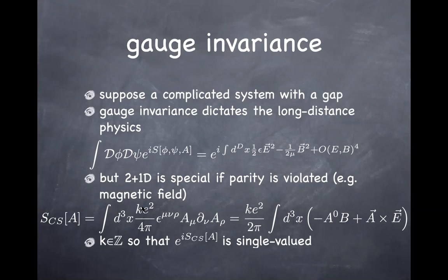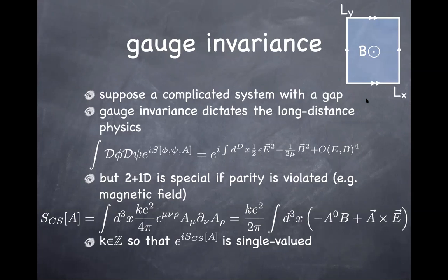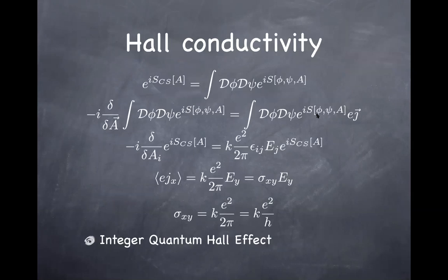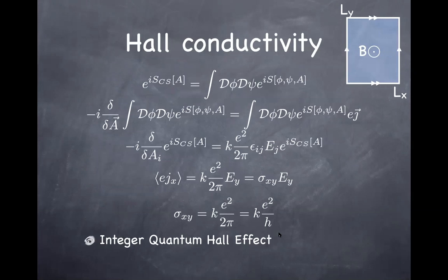Imagine you have a two-dimensional system and you apply a magnetic field through it. Assume for now there is no boundary — identify opposite sides of the rectangle to make a torus. In that setup you can study what the gauge transformation does to the Chern-Simons term. The first thing is to relate the coefficient of the Chern-Simons term to the Hall conductivity, and then come back to the quantization condition from gauge invariance.